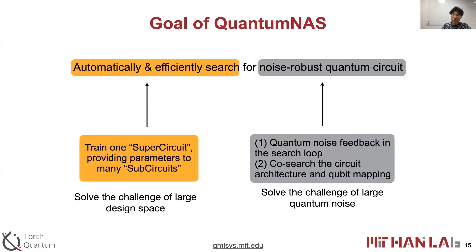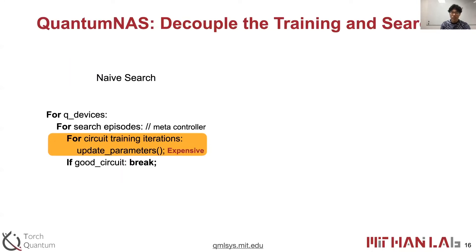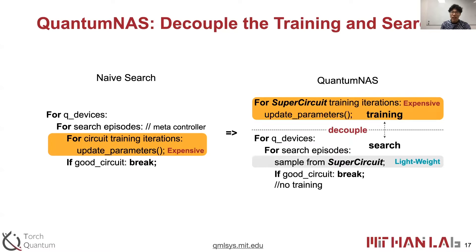The automatic and efficient search is achieved by the super circuit, which is trained once but used for many sub-circuit candidates. Noise robustness is achieved by involving quantum noise feedback in the search loop and co-searching the circuit architecture and qubit mapping. Intuitively, QuantumNAS decouples the training and search processes. In the naive approach, three nested for-loops — over quantum devices, search episodes, and parameter updates — make the overall cost very large. Instead, QuantumNAS performs expensive parameter updates only once and uses them for lightweight evaluation of circuit architecture candidates many times, significantly reducing search cost.